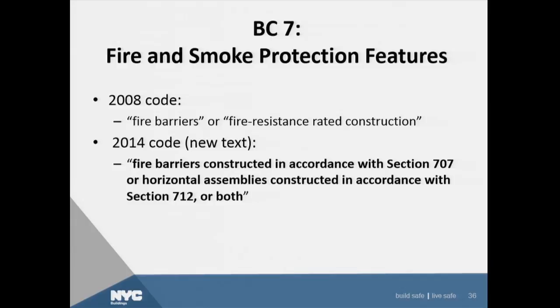Fire and smoke protection features: we had definitions in the 2008 code for fire barriers and fire resistance-rated construction. We now have fire barriers and horizontal assemblies, gone into great detail in Section 707 for fire barriers and Section 712. We have extensive requirements for these devices. The barriers and horizontal assemblies have full sections describing what is needed and the rating requirements.